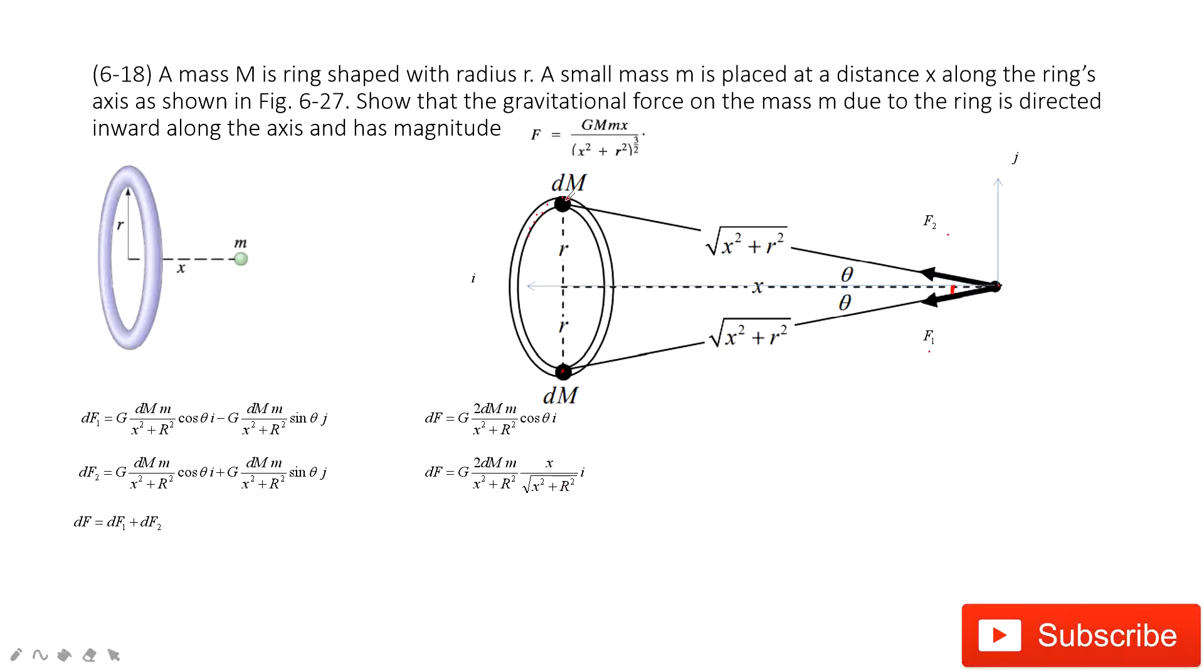Because we consider this dm is just a small fraction of this ring, now we do the integral to find the total mass for this ring. We do integral on both sides. Then this small fraction dm becomes the capital M.